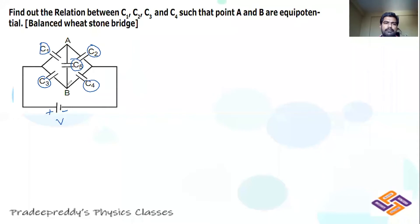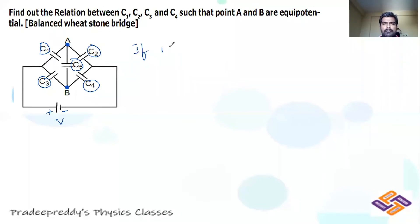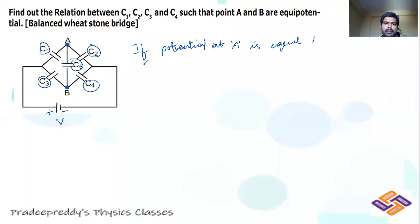Now, if the potential at point A and the potential at point B — if I consider those two potentials are equal — if potential at A is equal to potential at B, then what would happen?